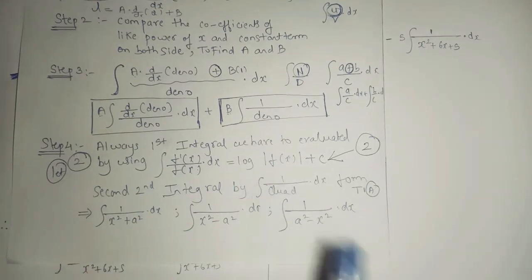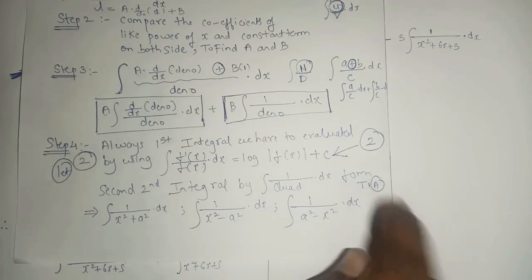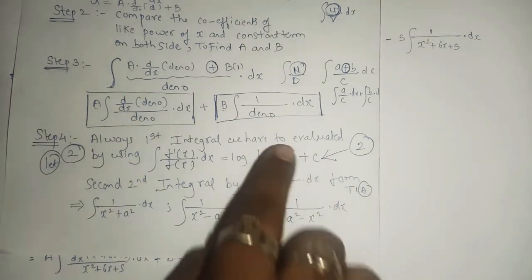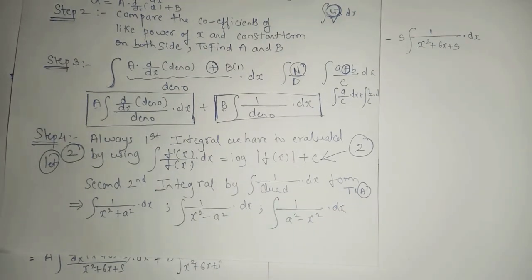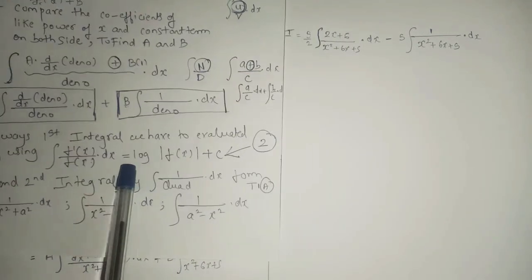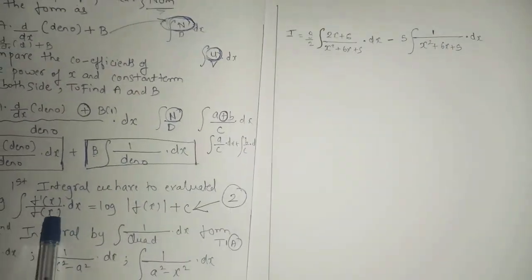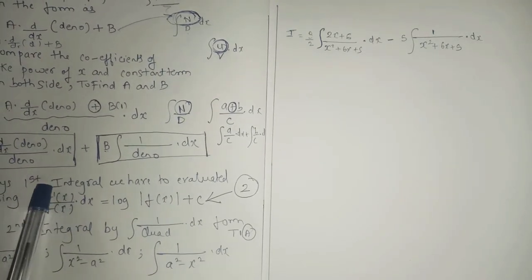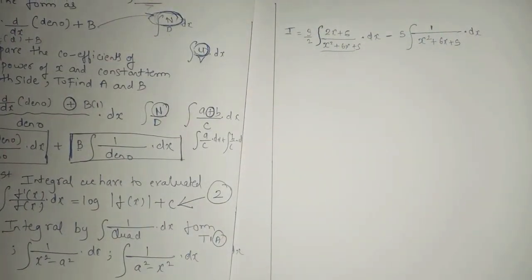The second part converts into 1 upon quadratic form. This sum is a combination of two sums: exercise number two and exercise number three. For the first part, check the derivative of the denominator: derivative of x squared plus 6x plus 5 is 2x plus 6, which exactly equals the numerator, so we can directly apply the f'(x)/f(x) formula.